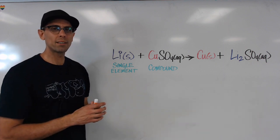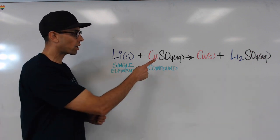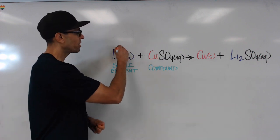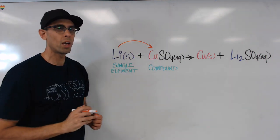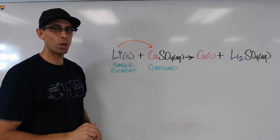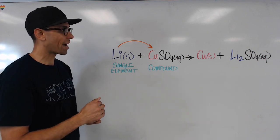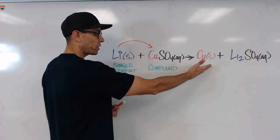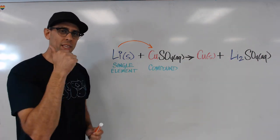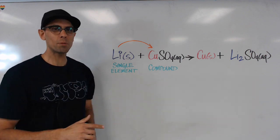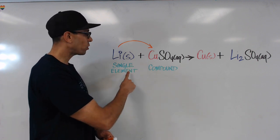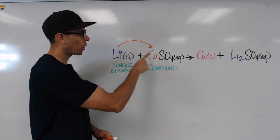Now what is it going to replace? Single replacement reactions also feature a compound. What actually happens in these reactions is the single uncombined element is going to replace or substitute one of the elements in the compound. In this case, lithium is going to replace the copper. So when we look at the products, copper is now alone and the lithium is participating in the compound lithium sulfate. The identifiable feature of any single replacement reaction is: look for a single uncombined element reacting with a compound, and notice whether or not it replaces one of the elements in the compound.